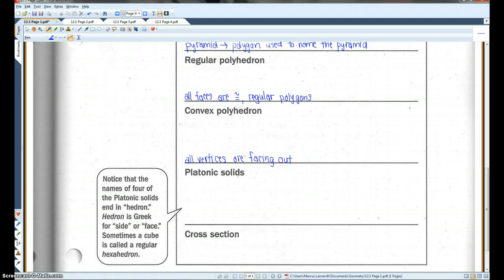A platonic solid, there are actually five regular polyhedra called platonic solids. There's a regular tetrahedron, which has four faces. A cube, which has six faces. A regular octahedron, which has eight faces. A regular dodecahedron, which has 12 faces. And a regular icosahedron, which has 20 faces.